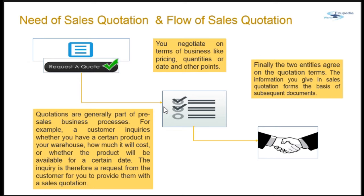When the two entities agree on the quotation terms, the information provided in the sales quotation forms the basis of the whole sales cycle. The quotation document provides a pre-sale processing environment which allows preparation of the document very similar to a sales order, without actually registering the goods as being on order. Confirming the quote means creating a sales order document, which uses the information of quantities, product pricing, and other details from the quotation. Any additional data you agree upon can be changed within the sales quotation or the sales order.